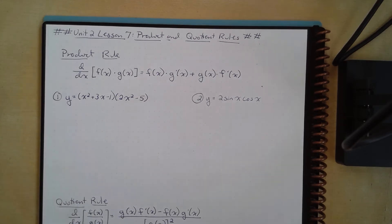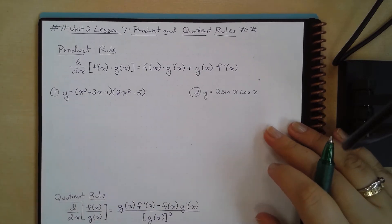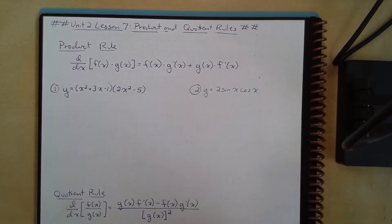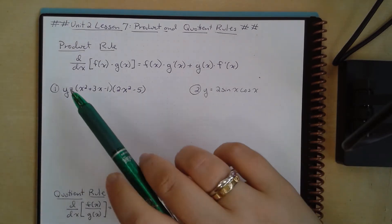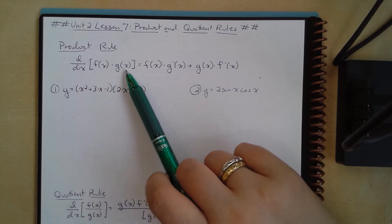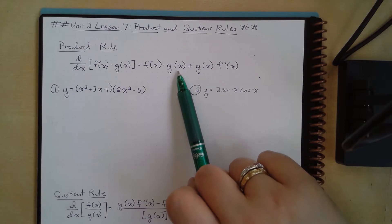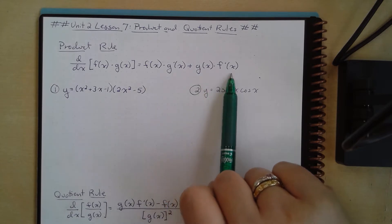We've talked about differentiation with some basic differentiation rules, but there are more ways to differentiate. One of those ways is using what's called the product and quotient rules. We're going to first start with the product rule. The product rule states the derivative of f(x) times g(x) is equal to f(x) times the derivative of g(x) plus g(x) times the derivative of f(x).